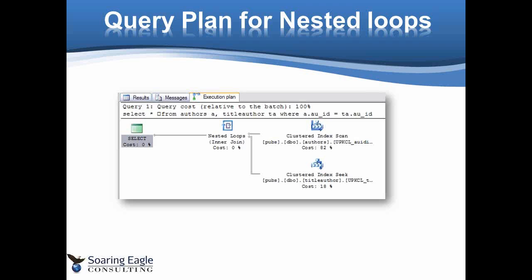A clustered index seek is a good thing. One more red flag to look out for as we're looking at joins: an index seek is a good thing — it means we're using the B-tree to start at the root page, identify the row, and bring back the row. An index scan may be a bad thing. An index scan means it's scanning the entire index as opposed to using the structure. Now, we don't have a WHERE clause in this query other than the join clause, so we want the whole thing — we're going to have to do a scan of one of the tables, and in this case it chose authors.